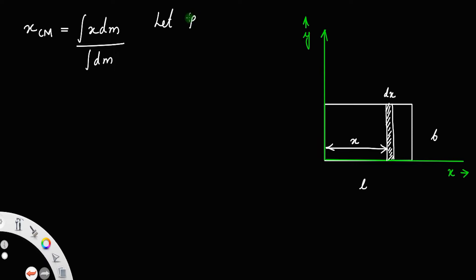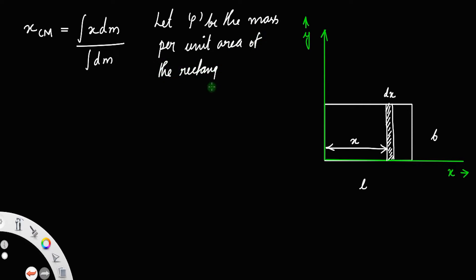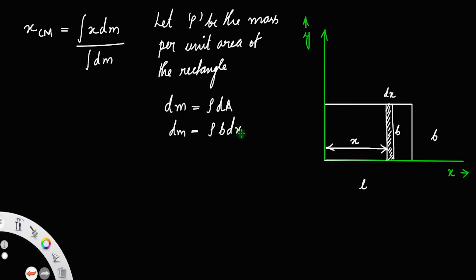Let ρ be the mass per unit area of the rectangle. Then dm is equal to the mass per unit area into the area of this strip. The length of the strip is b and the breadth is dx, so dm is equal to ρ into area, which is b times dx. The strip has dx as its breadth and b as its length, so area equals b·dx.